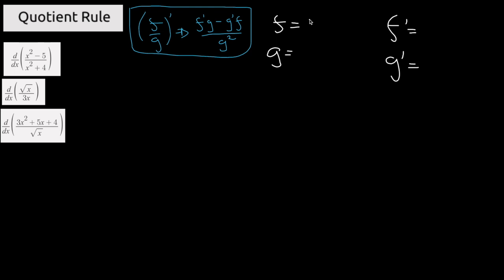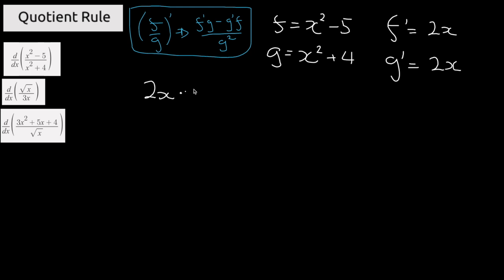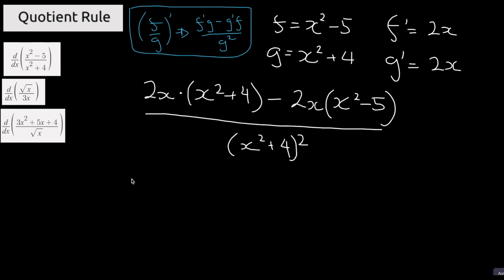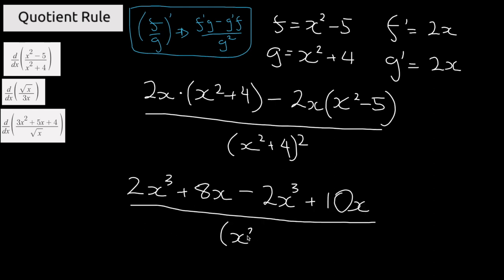For the next one, f is equal to x squared minus 5, f prime is equal to 2x, g is equal to x squared plus 4, and g prime is equal to 2x. Using the quotient rule we write the expression: f prime 2x multiplied by (x squared plus 4) minus g prime 2x multiplied by (x squared minus 5), all divided by (x squared plus 4) squared. Simplifying: 2x³ plus 8x minus 2x³ plus 10x, divided by (x squared plus 4) squared.